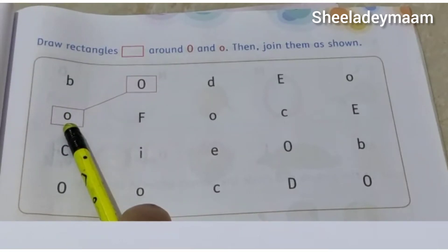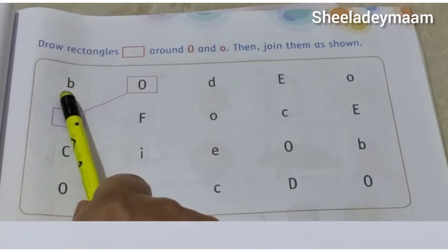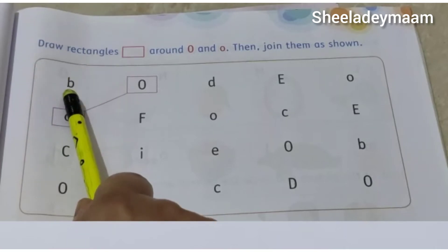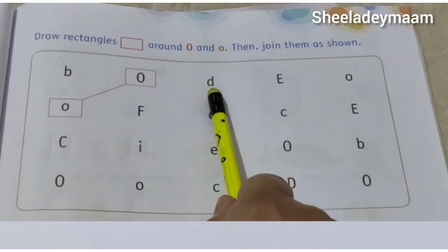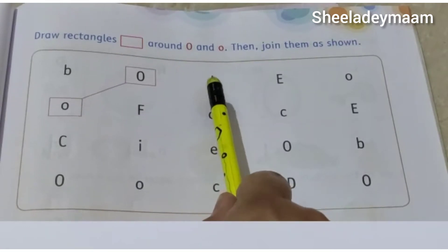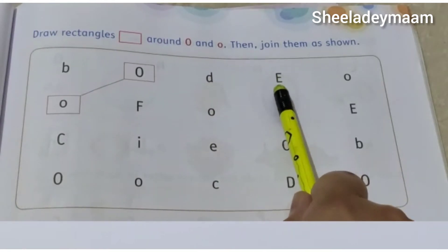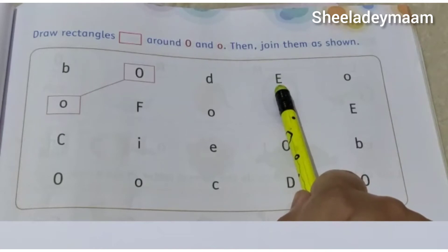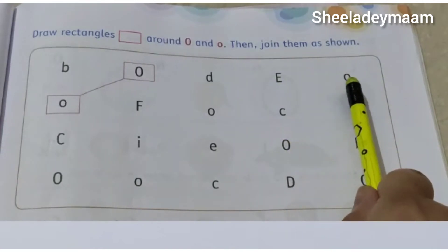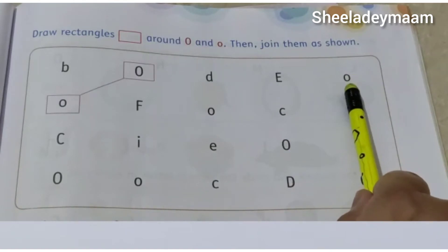And our first letter is — tell me, children, which letter is this? Yes, children, you are correct. This is letter B, this is lowercase b. And which letter is this? This is letter D, this is lowercase d. And this is letter E, this is capital letter E. Now tell me, children, which letter is this? Yes, you are correct. This is letter O, this is lowercase o.